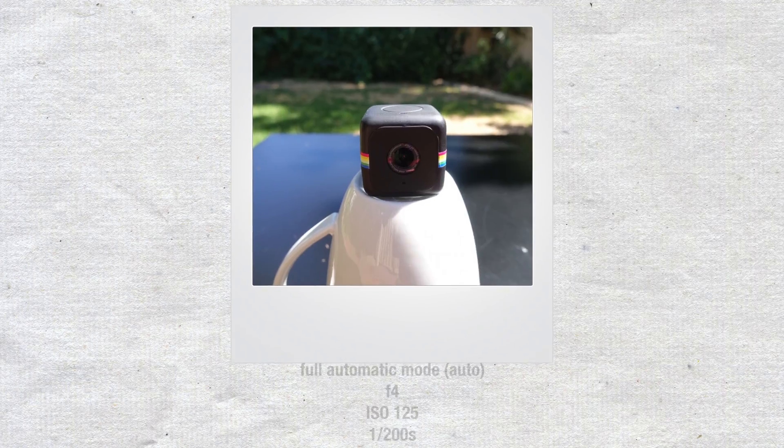The last picture was just a 'why not' moment. I wanted to see how the camera would do in full automatic mode. The camera's computer used an ISO of 125, aperture of f4, and a shutter speed of 1/200th of a second. It also appears as if it changed the white balance to a slightly warmer temperature.